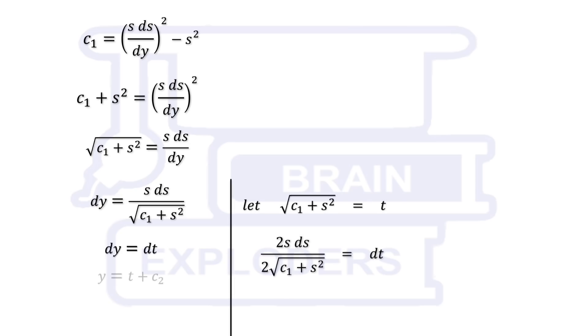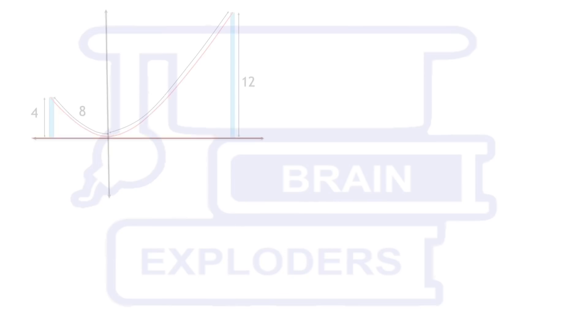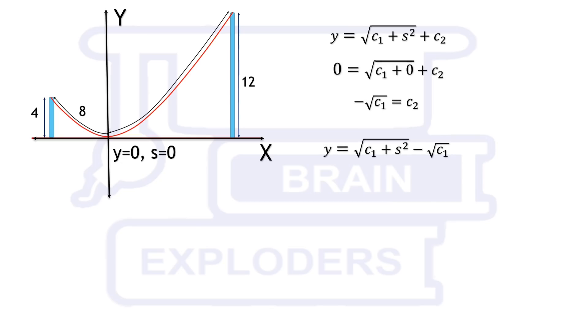Substitute denominator by T and solve. Now we have a simple equation. In adjacent Cartesian plane at y equals to 0, s is also 0 which gives us a new relation y square plus 2y times root c₁ equals to s square.